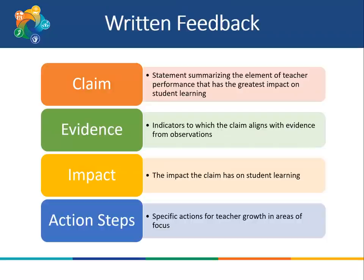After every observation, the administrator will write a claim, evidence, impact statement. This is a qualitative description of performance. The claim is a statement summarizing the element of teacher performance that has the greatest impact on student learning in that lesson. The evidence are the indicators to which the claim aligns, with evidence from the observations. The impact is the impact that the claim has on student learning. Action steps are specific actions for the teacher to take in the areas of focus. Administrators will be trained on the claim evidence impact process in detail through their training institute.